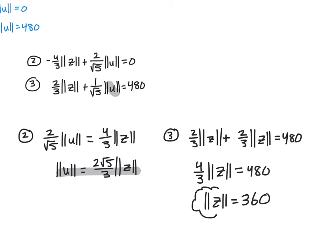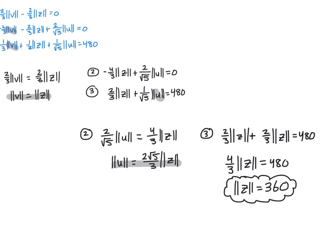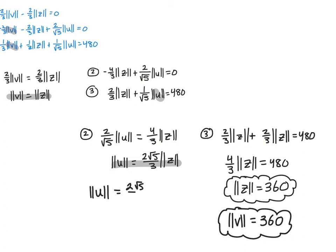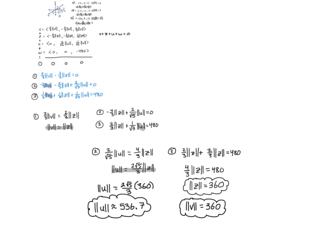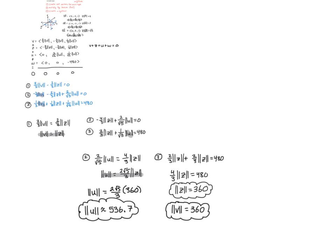Since |Z| = 360 and we know |V| = |Z|, we also have |V| = 360. Substituting |Z| = 360 into |U| = (2√5/3)(360), using a calculator gives |U| ≈ 536.7 pounds. So the tensions are 360 pounds, 360 pounds, and 536.7 pounds.